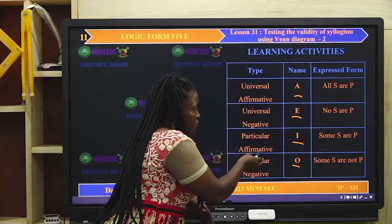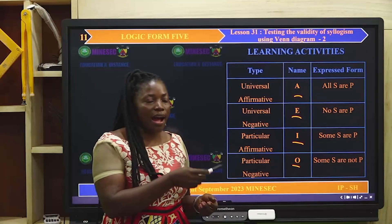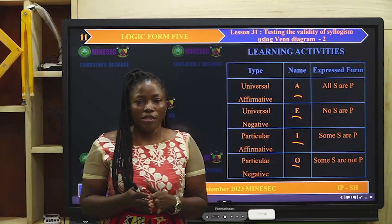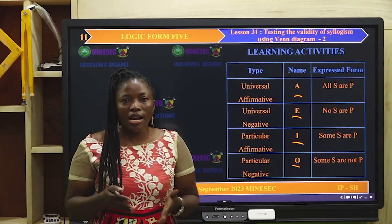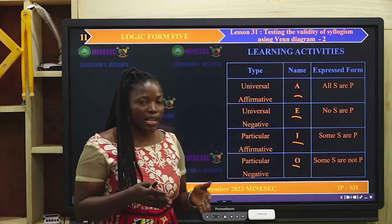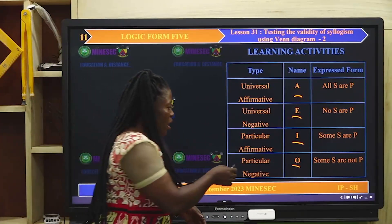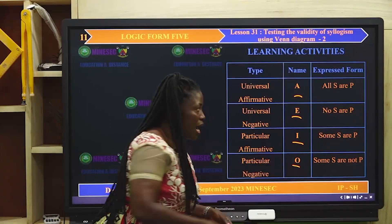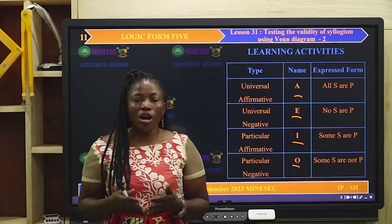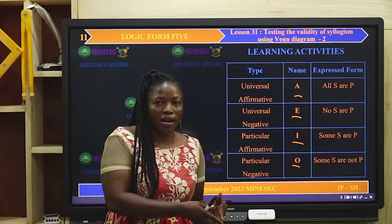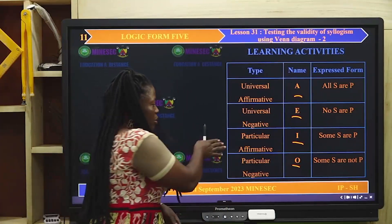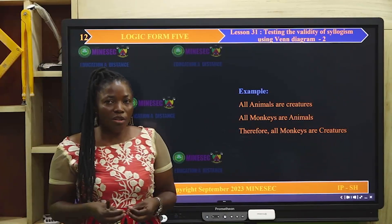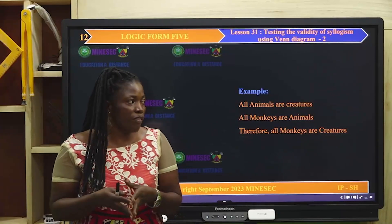Now we have the particular negative proposition, symbolized by O and expressed as 'Some S are not P'. Every argument must contain any three of those four propositions. Look at this example: All animals are creatures. All monkeys are animals. Therefore, all monkeys are creatures. We want to test the validity of such an argument.